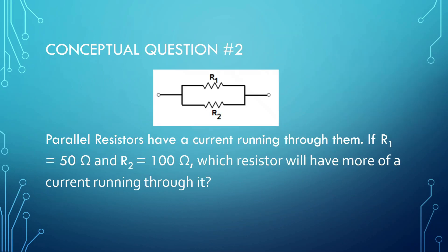Now let's look at the next conceptual problem. Parallel resistors have a current running through them. R1 equals 50 ohms, R2 equals 100 ohms. Which resistor will have more current? There will be more current through R1 because it has less resistance — the less resistance, the more current wants to go through. So it's going to be R1.